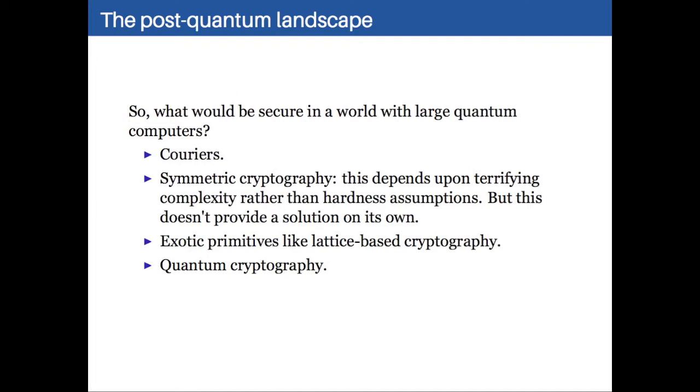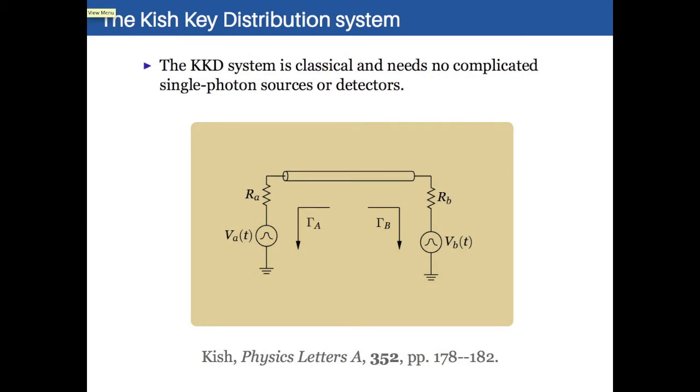So there's some interest in developing other systems that don't suffer from these problems. And one of these is the KKD scheme, also known as the KLJN scheme. So the Kish key distribution scheme is classical. It doesn't need single-photon sources or single-photon detectors, which is a big deal because a single-photon detector, which is generally an avalanche photodiode, might cost a couple of hundred dollars. So it's obviously not something that you can easily put into a small device. So this system doesn't need any of that. It just uses some resistors and some voltage sources and some switches.